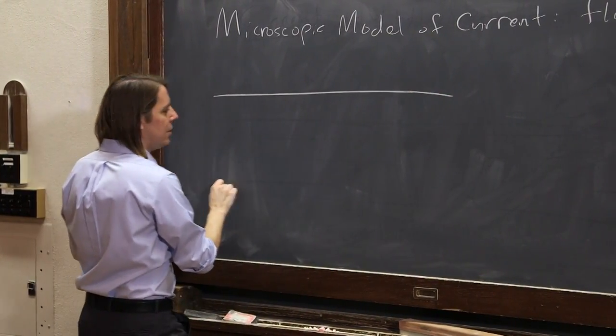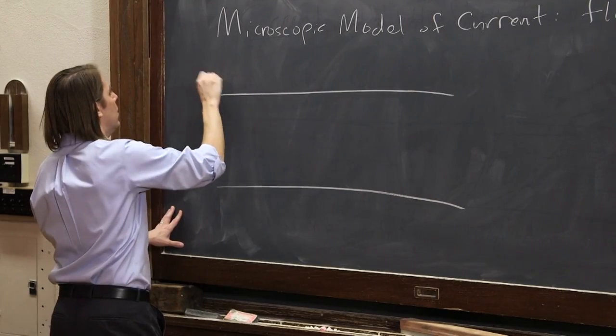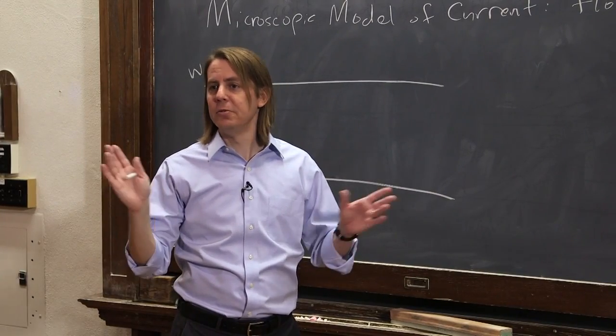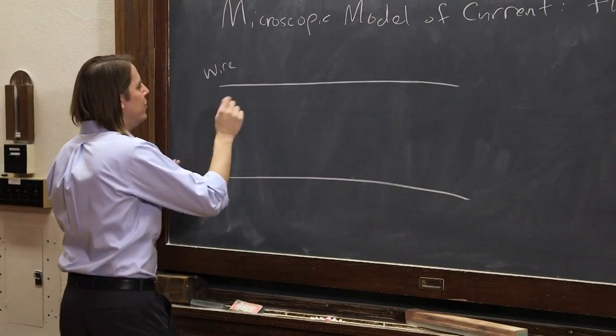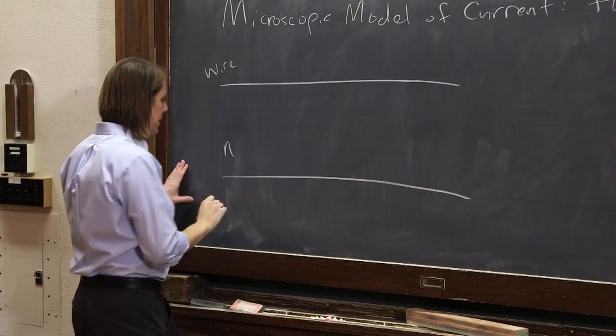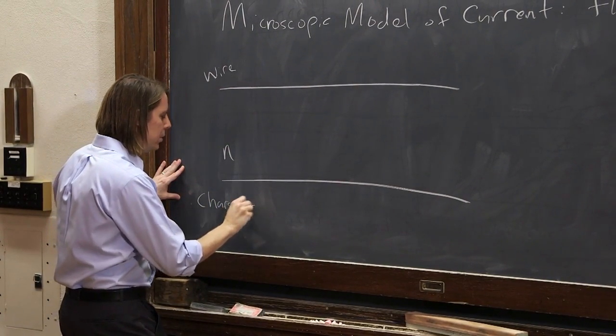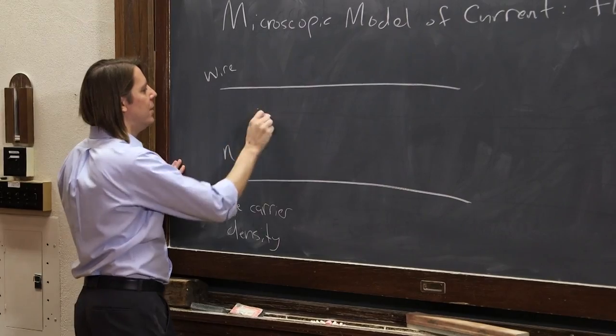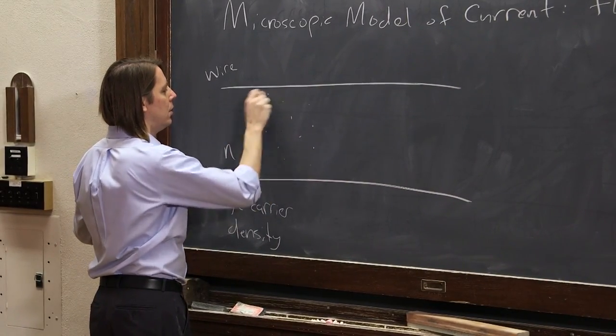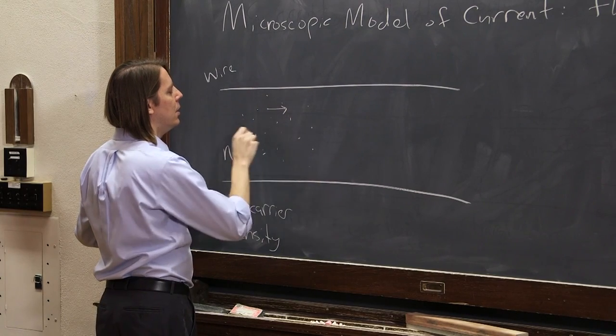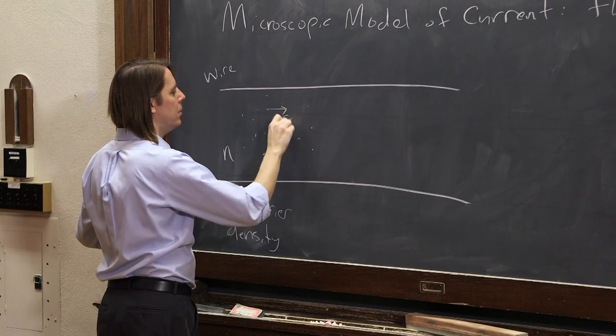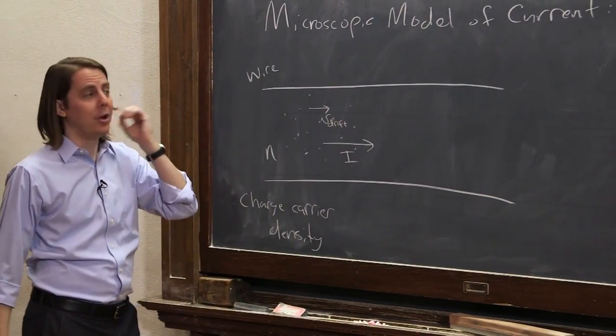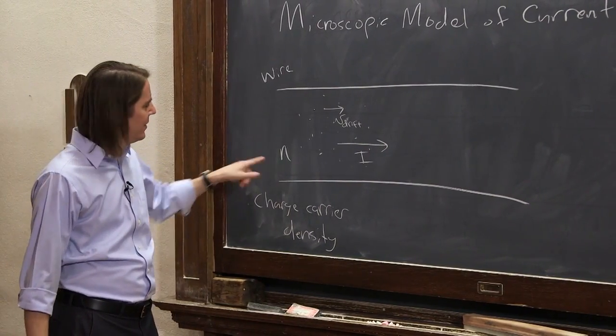So here's the big wire. And we're going to go into dreamland and just pretend that the charge carriers are positive. So here, we're going to use a new variable, n. n is the charge carrier density. So there's all these charge carriers in this wire, and they're moving along with v drift, and they're moving with the current i. So we're going to define them to be positive, and this is their density.